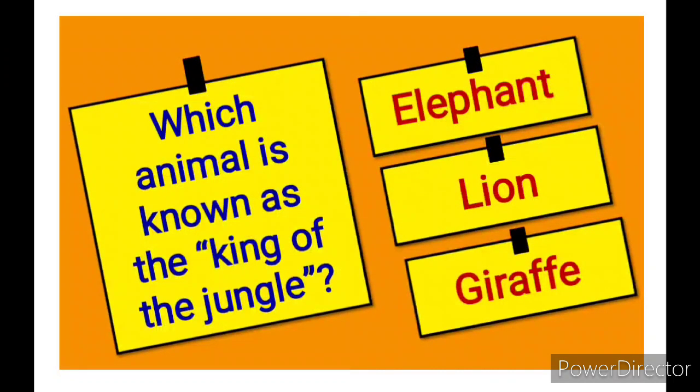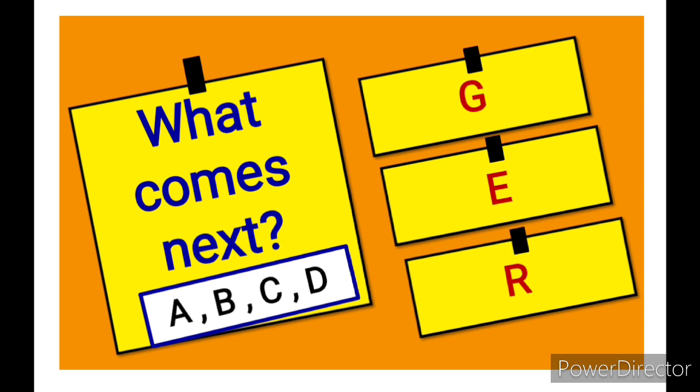Which animal is known as the king of jungle? Lion. What comes next? A, B, C, D, E.